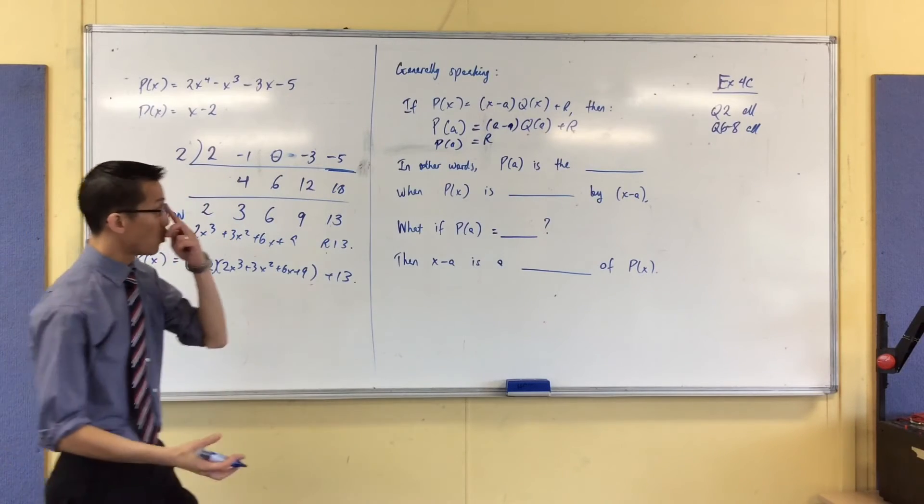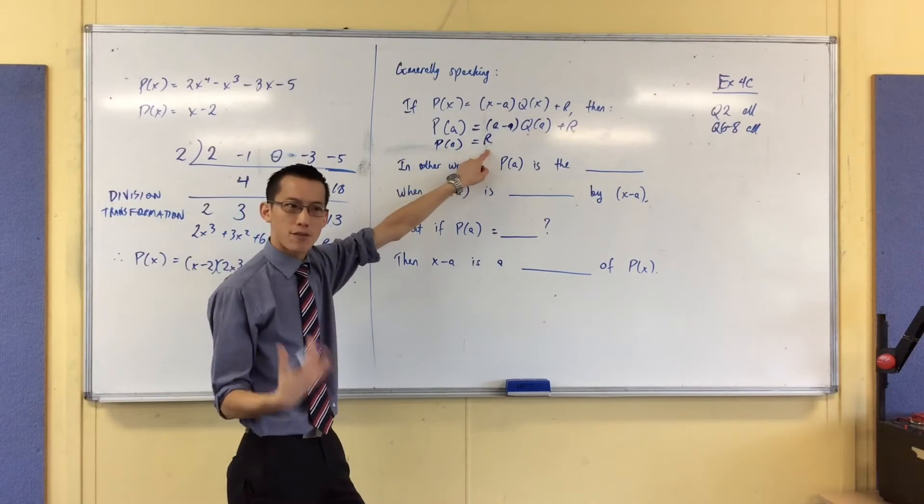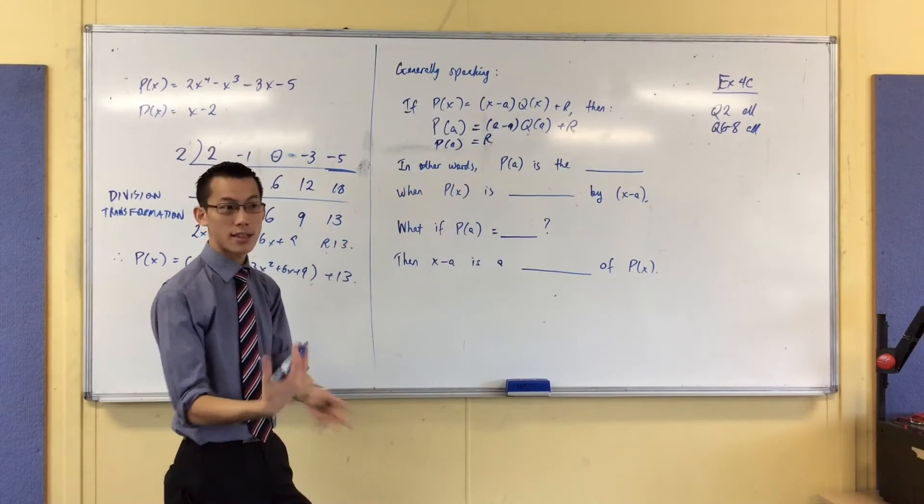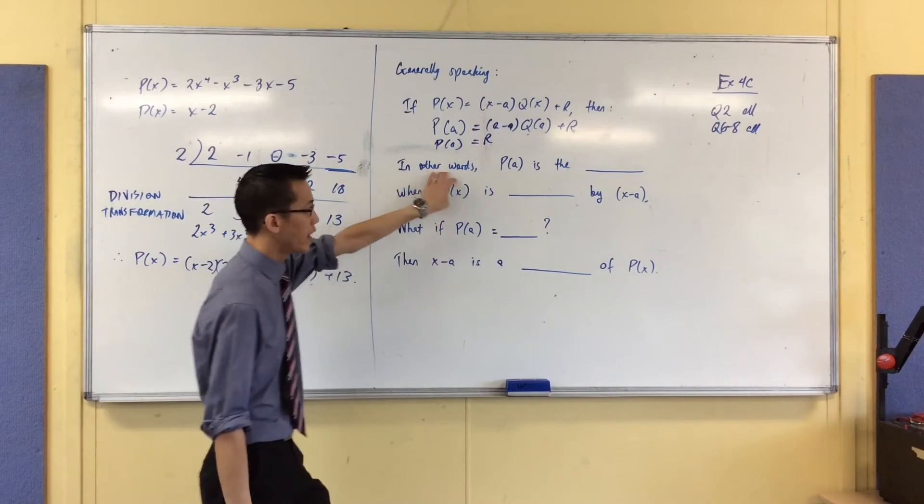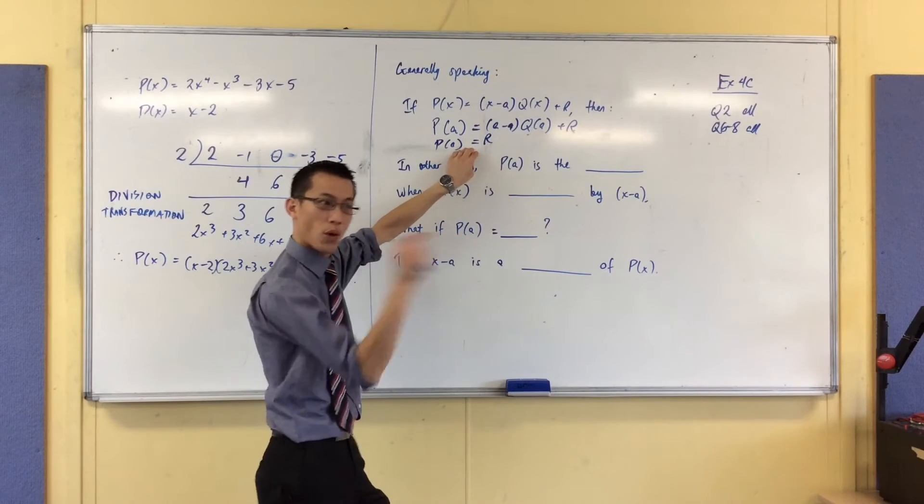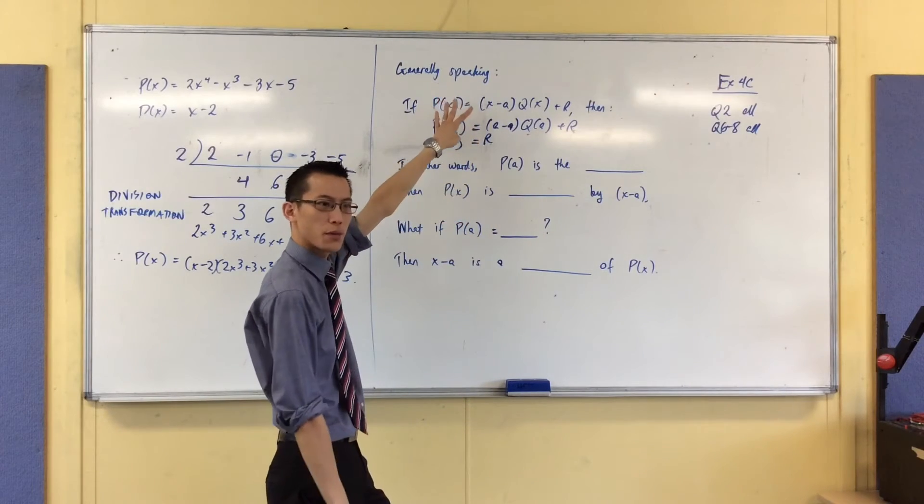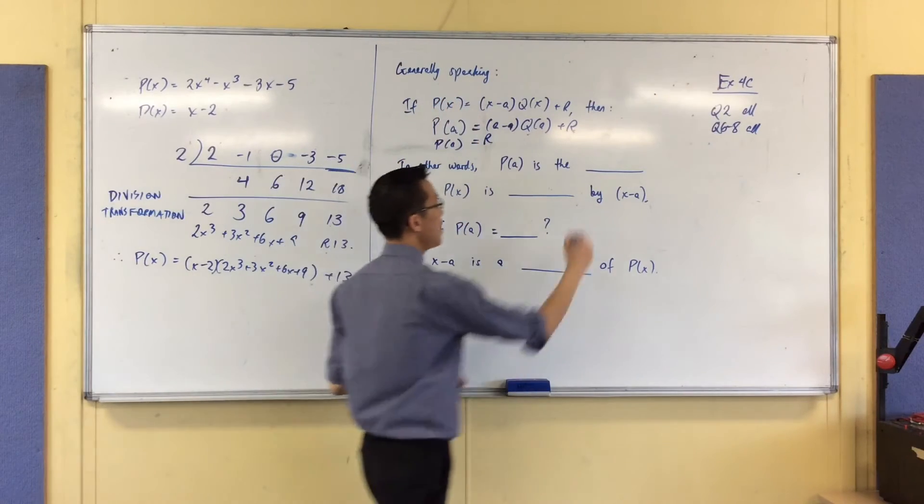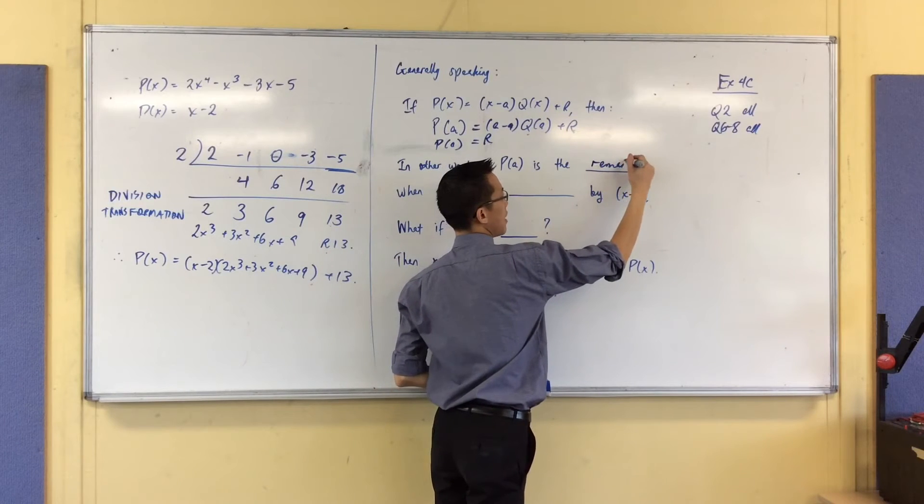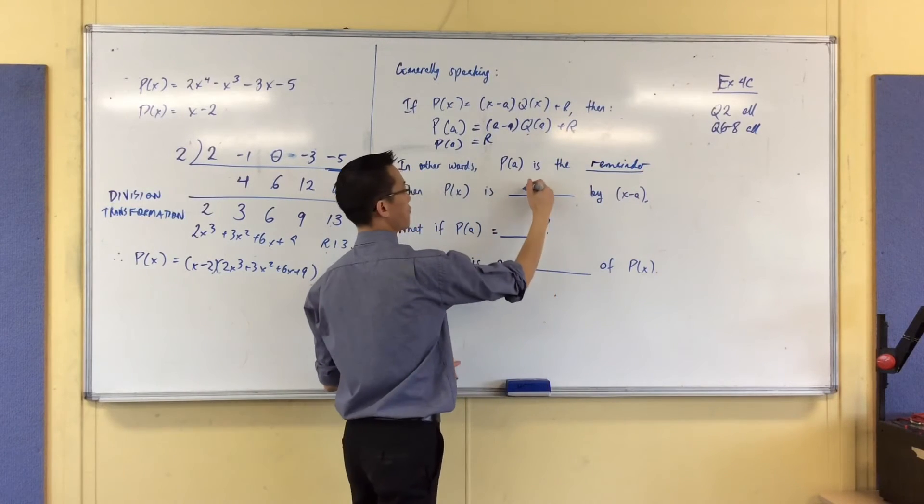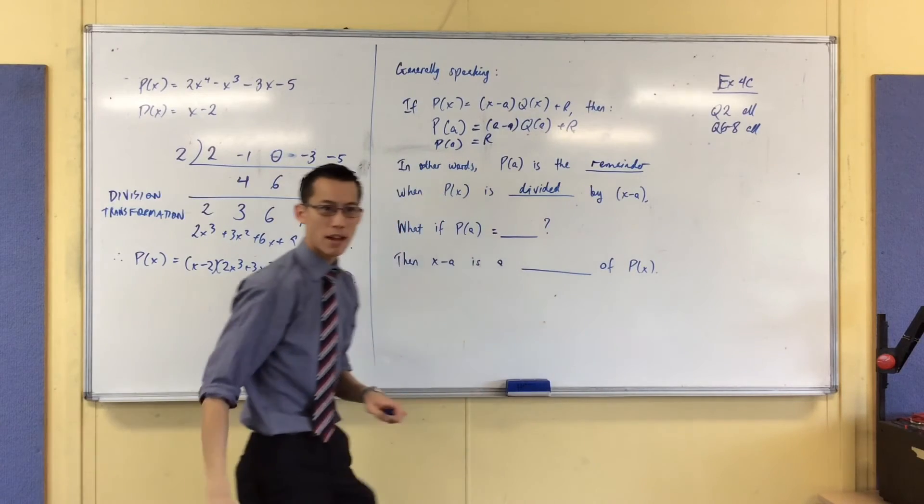In other words, what is r? The remainder after I've divided. So, here's my statement, and this is a theorem because it's so important. In other words, P(a), if you put in a, if you substitute it into your original polynomial, that's the remainder if you divide by x minus a.